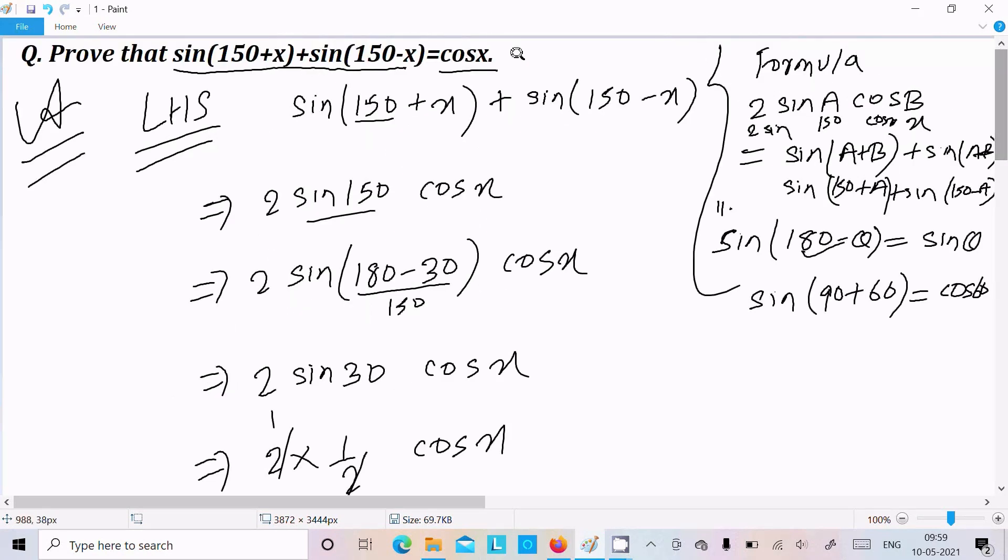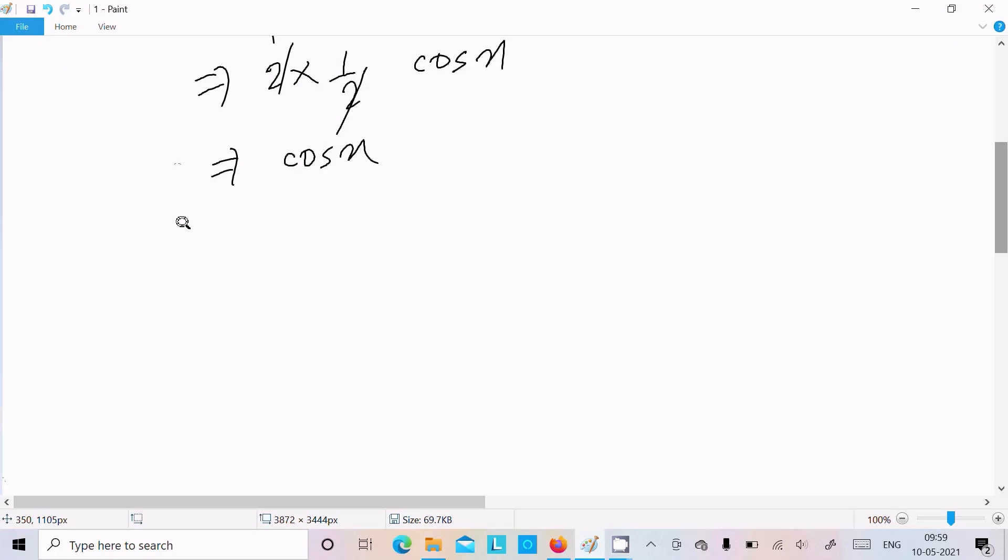So on the right side we have to make that cosx. Now thereafter LHS, left hand side, equals RHS, right hand side, equals cosx. It's proved.